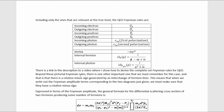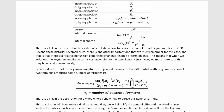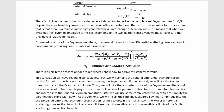Beyond the pictorial Feynman rules, there is one other important rule we must remember: there is a relative minus sign generated by an interchange of fermion lines. This means that when we write out the Feynman amplitude terms corresponding to the two diagrams, we must make sure they have a relative minus sign. The general formula for the differential scattering cross-section of two fermions producing some number of fermions is given, and there is a link in the description for a video where I derive this formula.